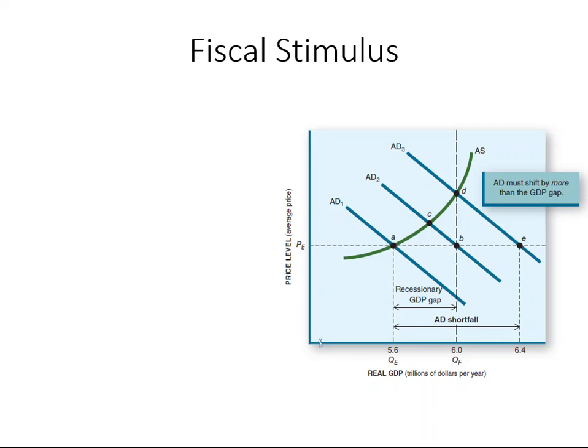In this video we will start to learn what fiscal stimulus is and what tools we can use to pull our GDP to meet our full employment GDP goals. First, I want to refresh your memory regarding a couple of very important concepts. The macro equilibrium is the combination of the price level and real output that is compatible with both aggregate demand and aggregate supply.